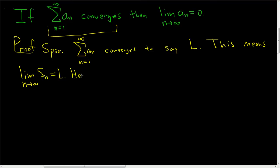So here, the nth partial sum is equal to a sub 1 plus a sub 2 plus dot dot dot plus a sub n.